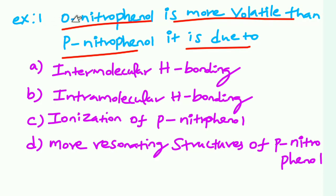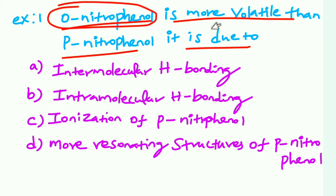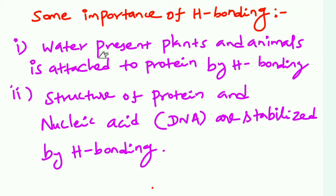Orthonitrophenol is more volatile than paranitrophenol. Why? Orthonitrophenol forms intramolecular hydrogen bonds, and intramolecular hydrogen bonds lead to lower boiling points, making it more volatile. That is why orthonitrophenol has a lower boiling point.